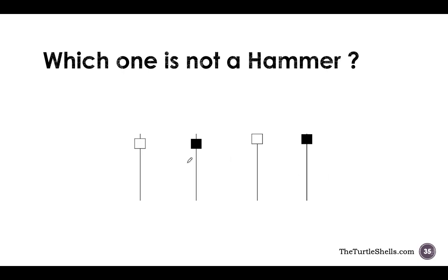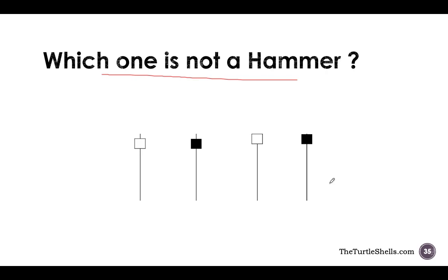This is very important. The question here is which one is not a hammer? If you look at all these candles, every candle looks like a hammer — the lower shadow is more than twice the height of the real body, the real body is small, the upper shadow is small. So we might say all four candles are hammers. But I am here to tell you that none of these is a hammer. None of them is a hammer, and I will tell you the reason why.